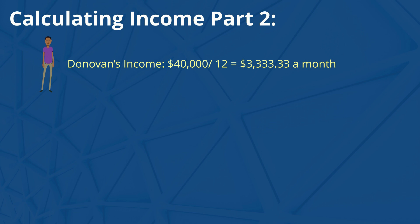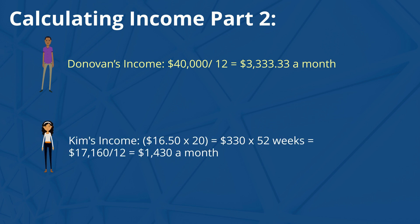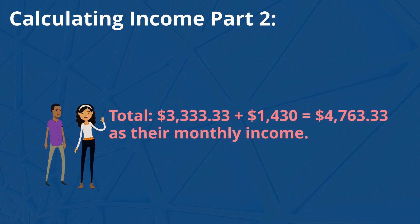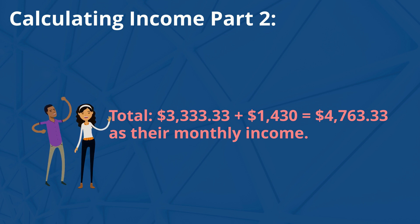Let's take a look at Kim's income now. $16.50 times 20 is equal to $330, times 52 weeks is equal to $17,160, divided by 12 is equal to $1,430 a month. Now let's add both of them together. $3,333.33 plus $1,430 is equal to $4,763.33 as their monthly income.